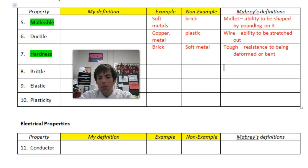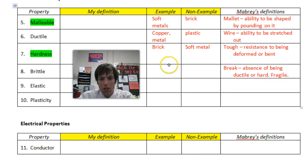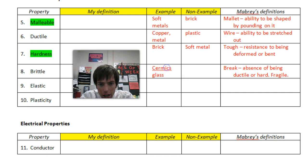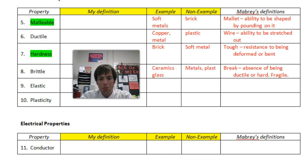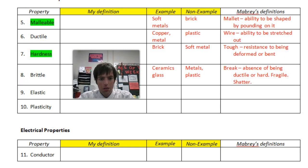Let's talk brittle. The key word there is 'break.' It is the absence of being ductile or hard, and it is also synonymous with the word fragile. Brittle stuff would be like ceramics or glass — ceramics or glass is brittle. A non-example would be things like metals or plastic, because when you hit them they don't break or shatter. Shatter — that's another good word for brittle.